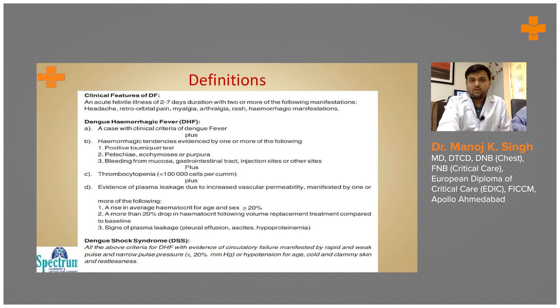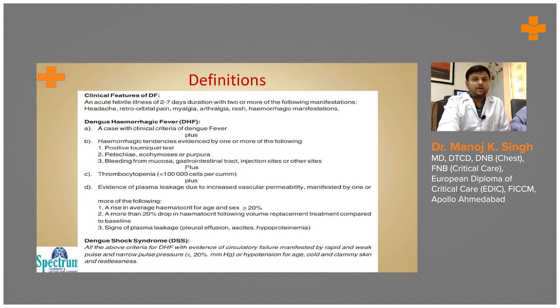Evidence of plasma leakage can be seen in the form of mild pleural effusion or mild ascites, followed by a rise in hematocrit of more than 20 percent, or a decrease in pulse pressure of more than 20 mmHg.